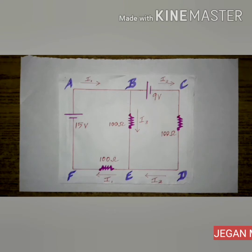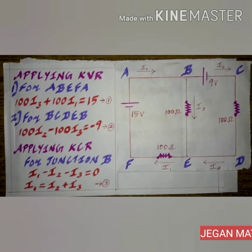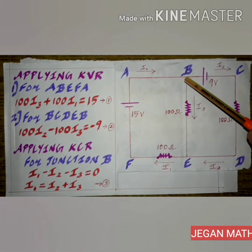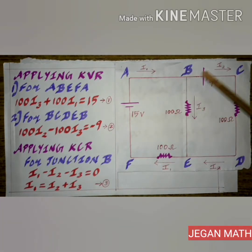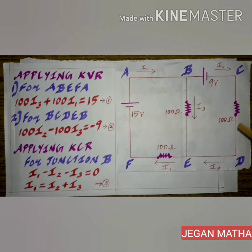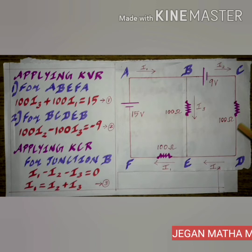This is a textbook question from chapter 2. For our convenience, we have taken the junctions A, B, C, D, E, and F. Now we are going to find the current in different parts. Here I1 at junction B is divided into two parts, I2 and I3. The current I2 passes from C to D and D to E. Current I3 passes from B to E. At junction E, both currents I2 and I3 combine and pass as I1.